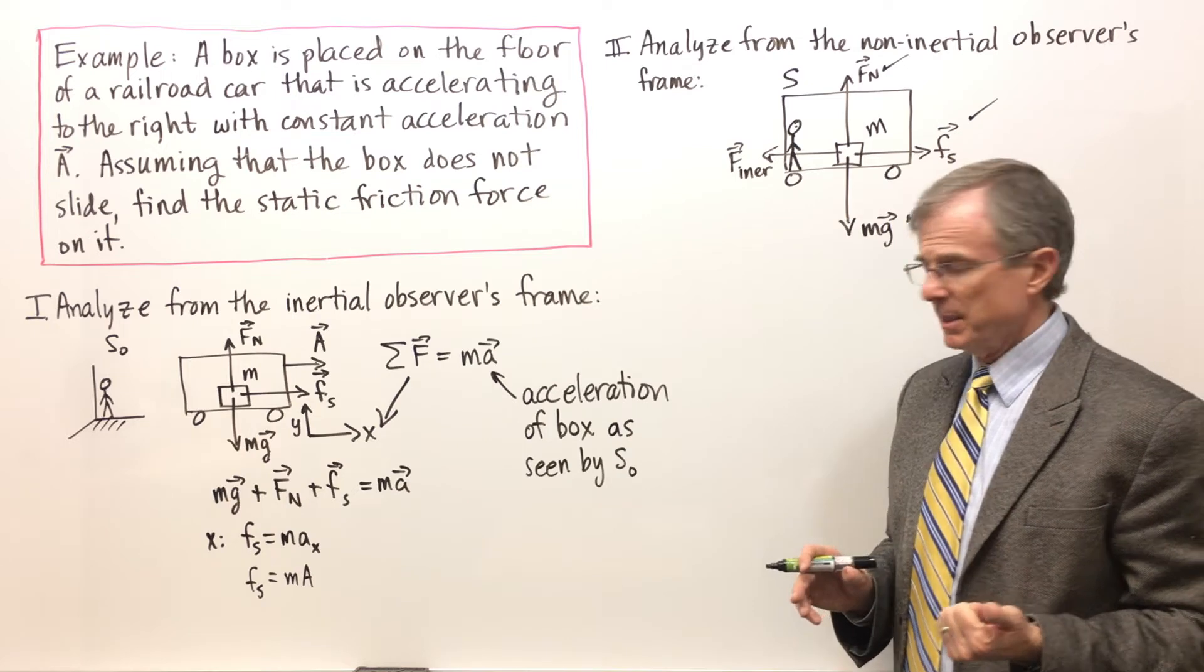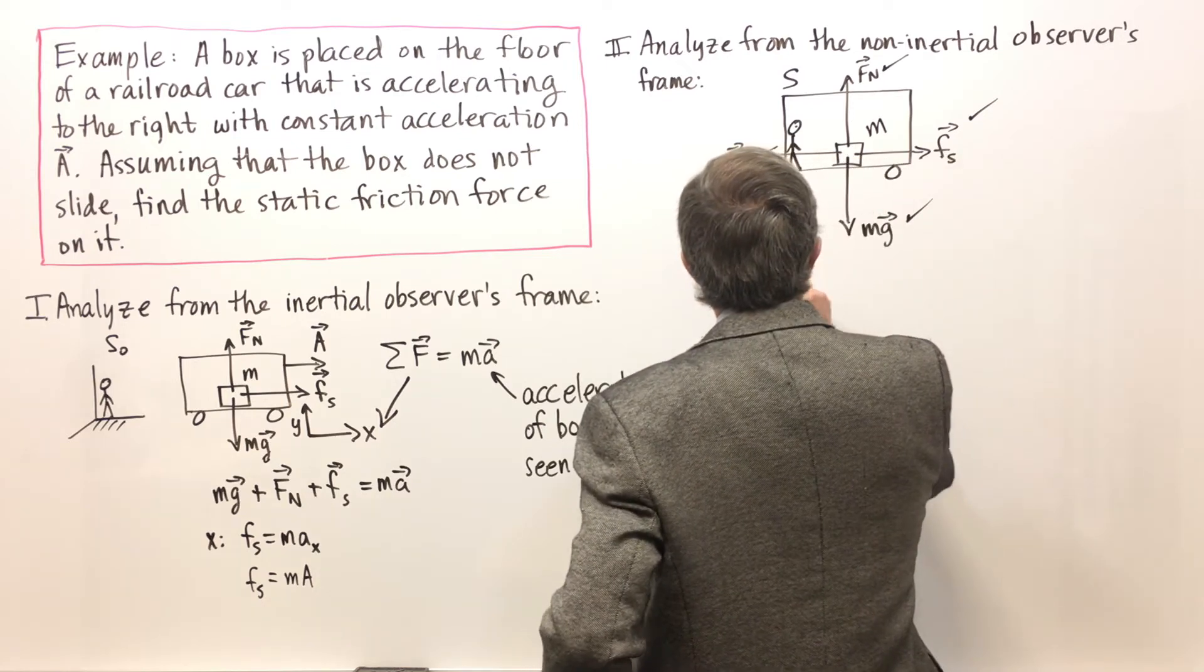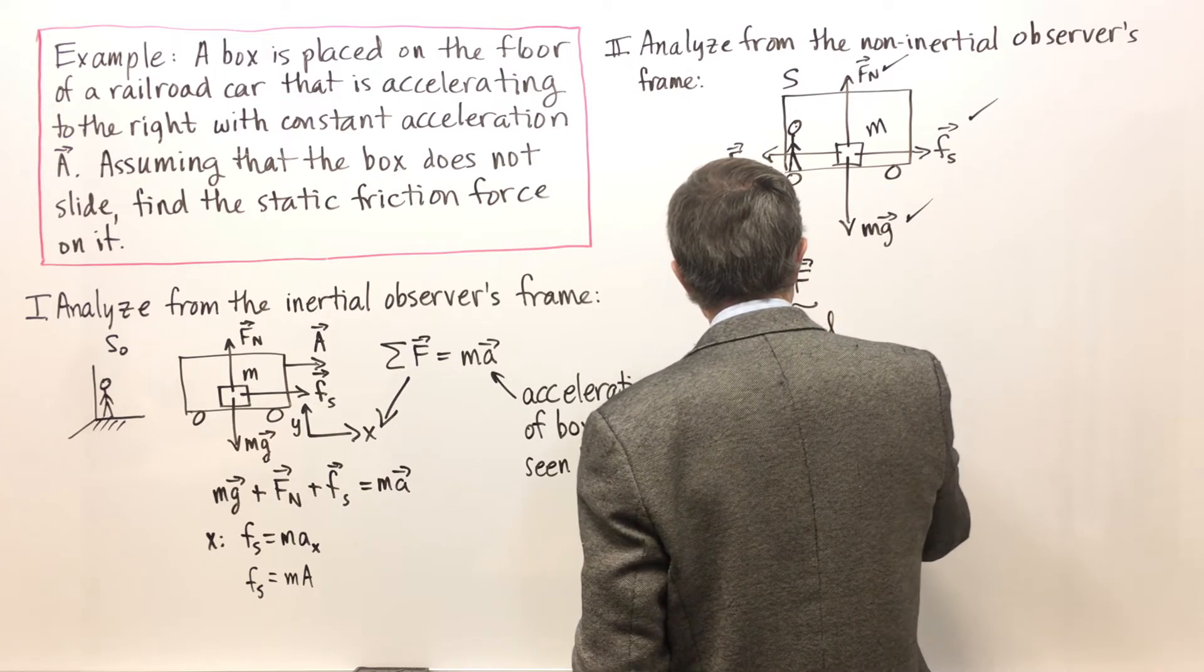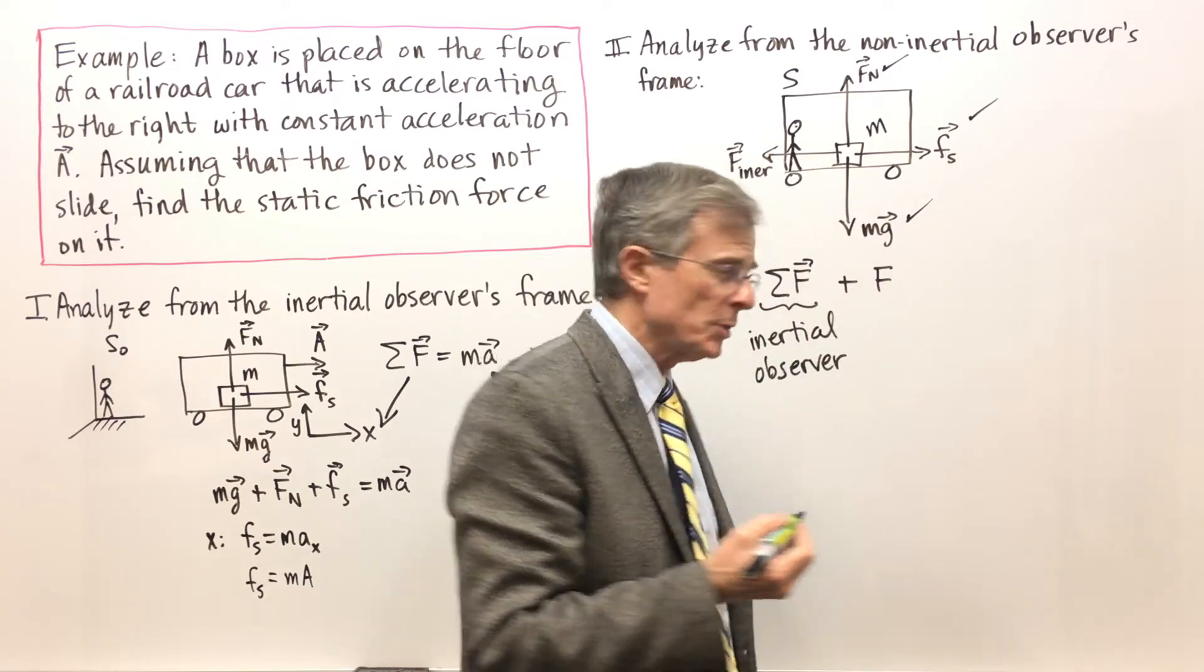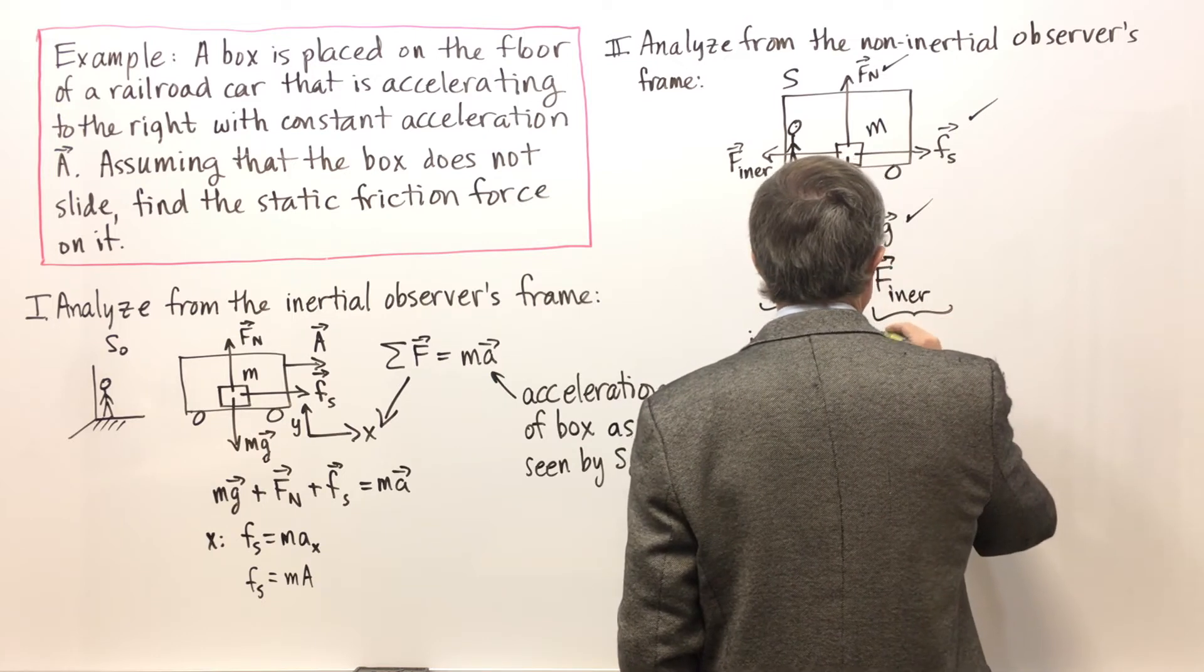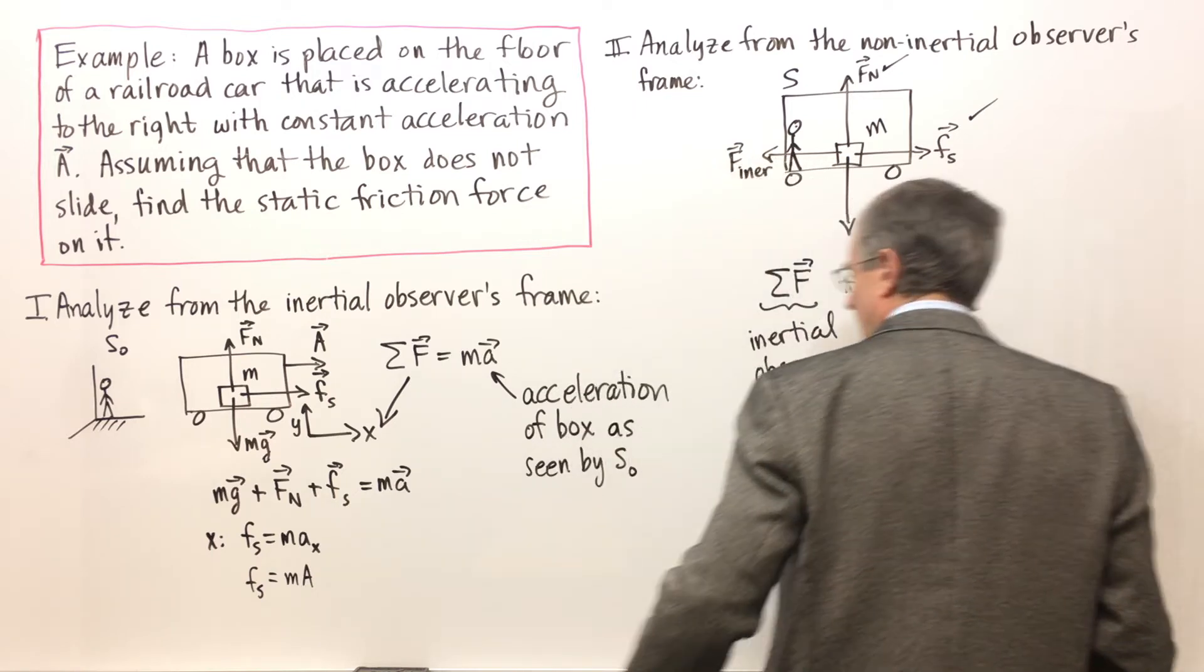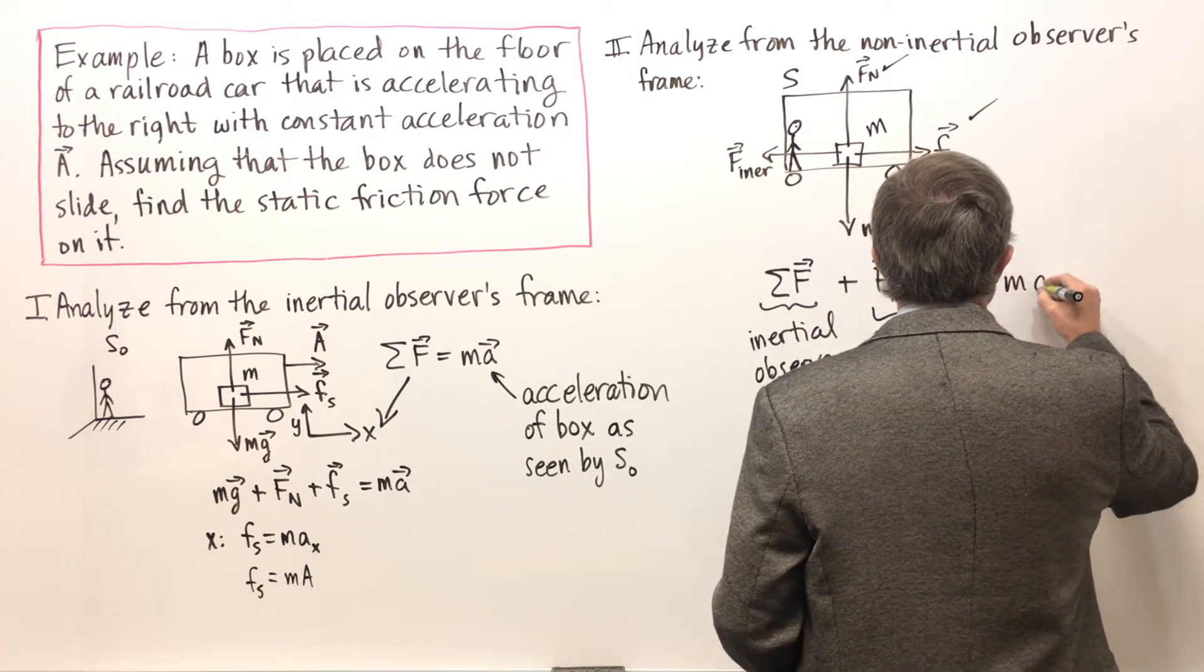So we've got these three. But as we talked about in the last concept, 9.2 I believe it was, there's an additional force that you have to include. So this is the sum of the forces as seen by the inertial observer, plus an additional force that we call an inertial force.